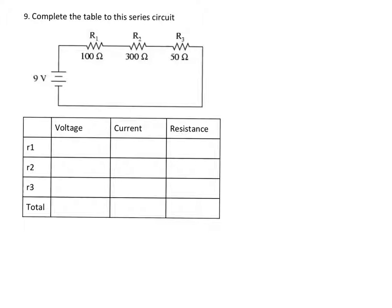So we've got each of the resistances: 100 ohms, 300 ohms, and 50 ohms. And then we also know the voltage of the battery is going to be 9 volts. So the next step I would do is...